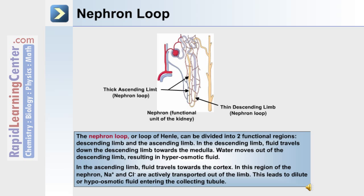The nephron loop can be divided into two functional regions: the descending limb and the ascending limb. In the descending limb, fluid travels down towards the medulla region of the kidney, and water moves out, resulting in hyperosmotic fluid. In the ascending limb, fluid travels towards the cortex of the kidney, and sodium and chloride are actively transported out of the limb. This leads to dilute or hypoosmotic fluid, which then enters the collecting tubule.